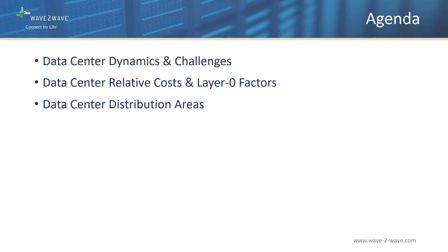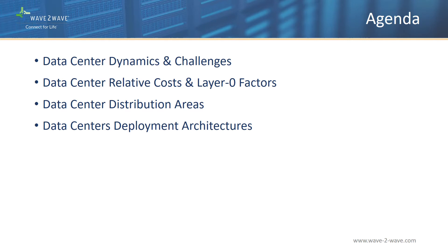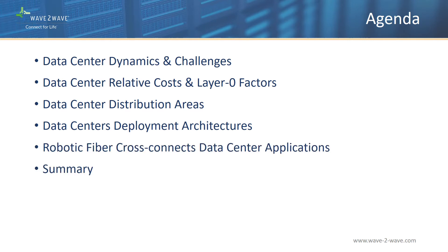We will also touch on data center architectures and specifically zero in on defining distribution areas and how these different architectural distribution areas affect various deployment architectures and scenarios. Once we have reviewed data center zoning and distribution areas, we will look at various ways robotic fiber cross-connects become a critical value-add ecosystem component within data centers. So let's get started.